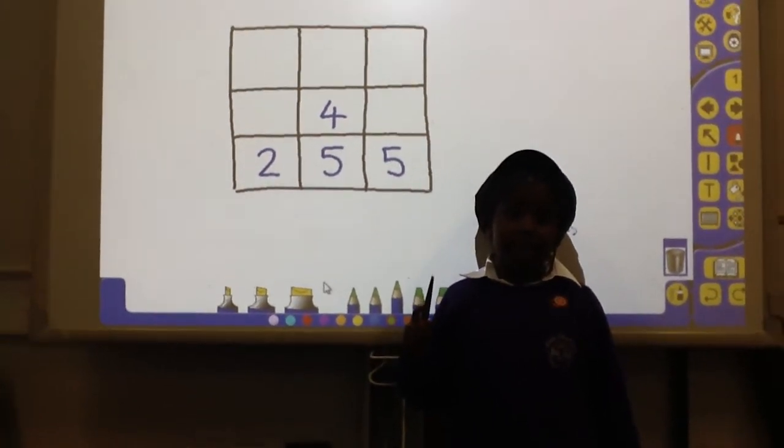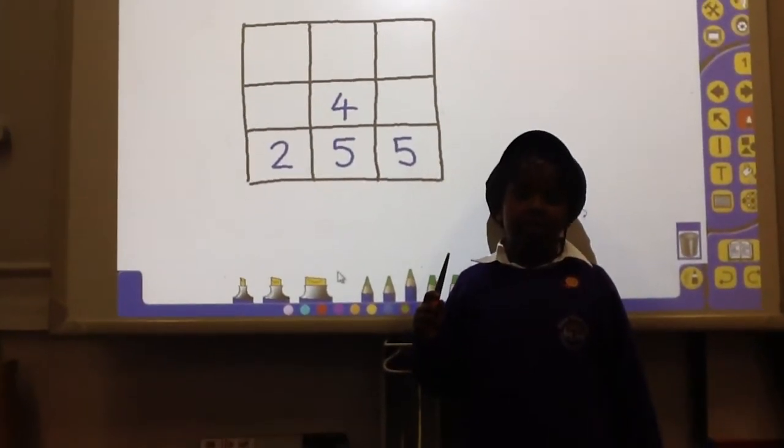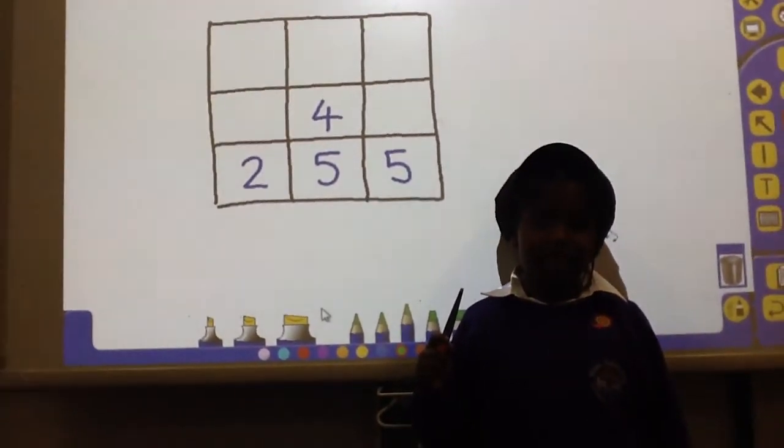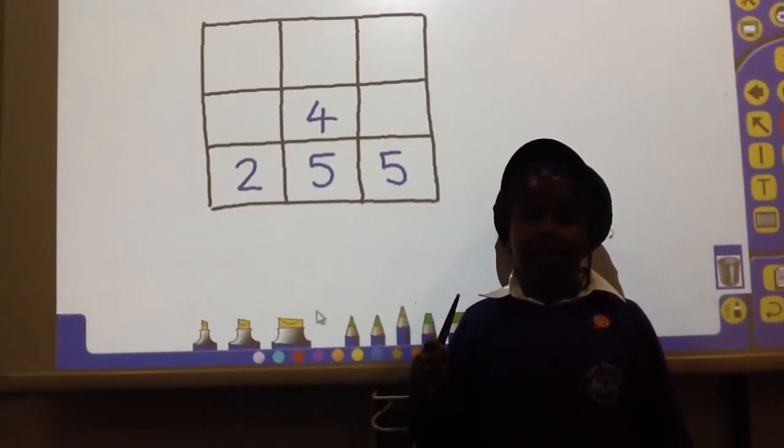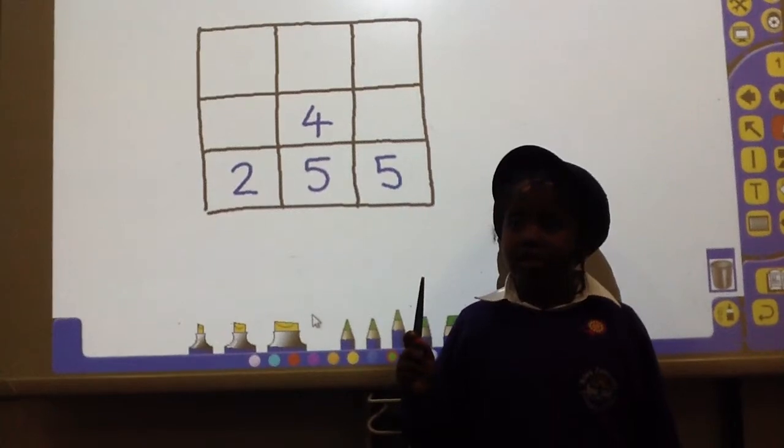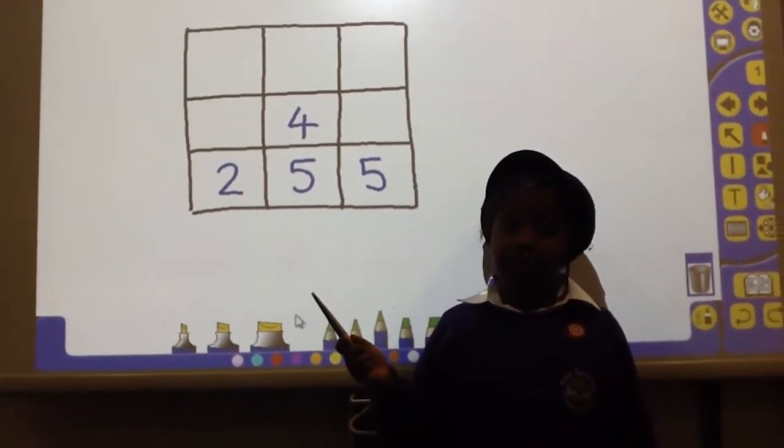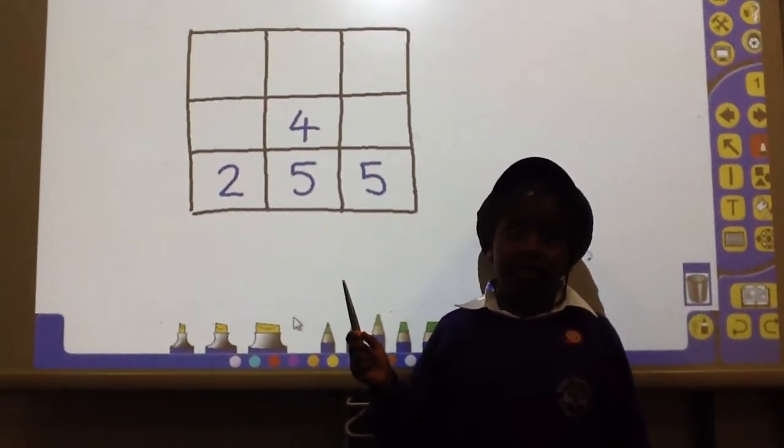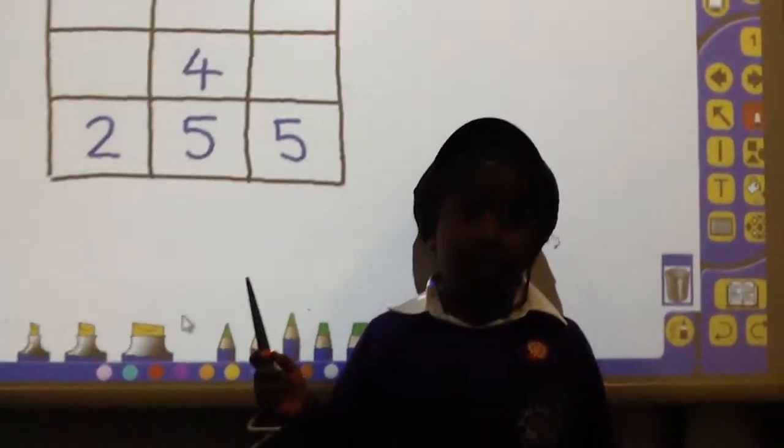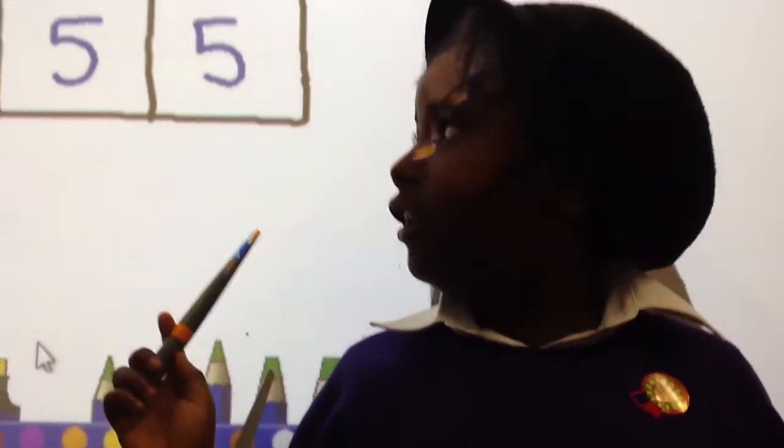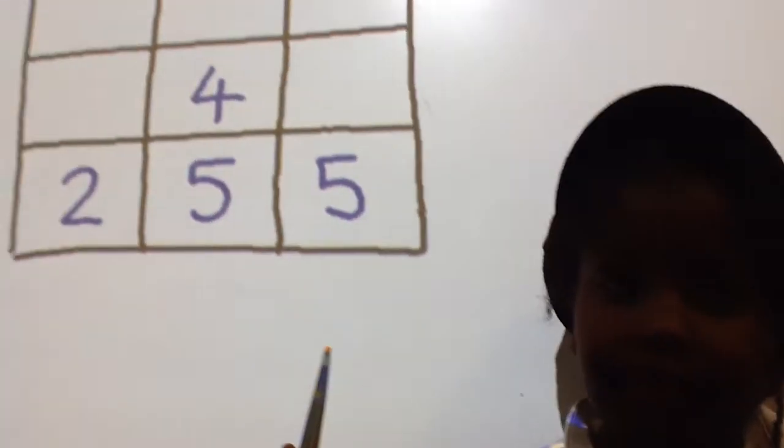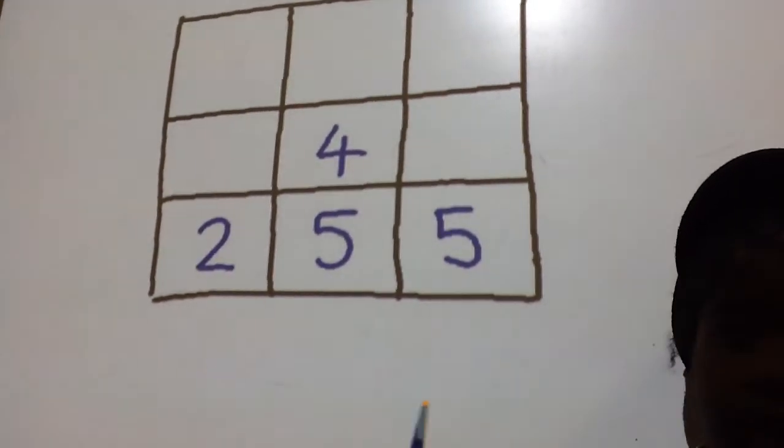Hello and today I'm going to teach you how to do magic squares. First, all the lines have to make the same number. So the 5 and 5 equals 10, and 2 equals 12, so the magic number is 12.